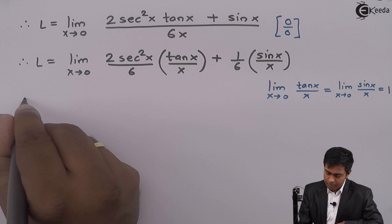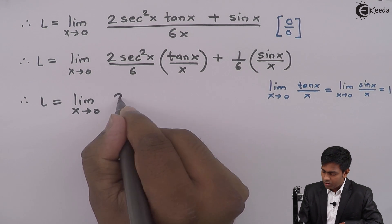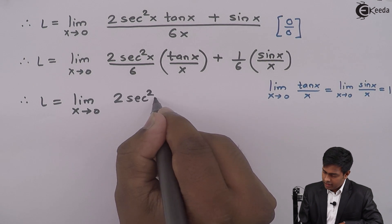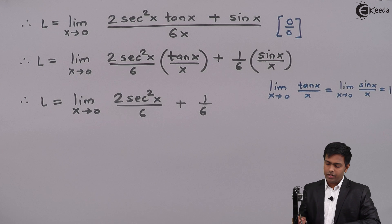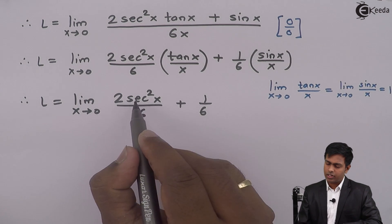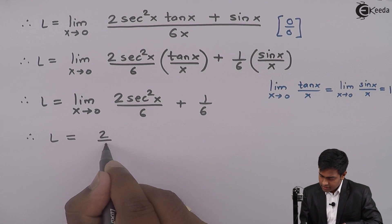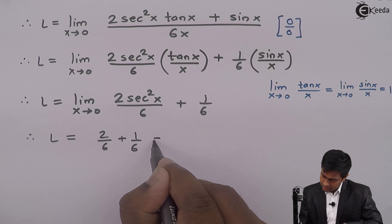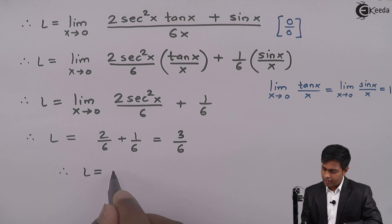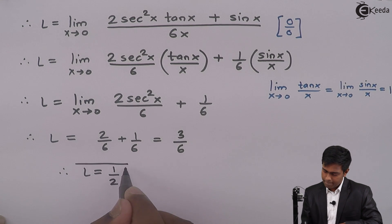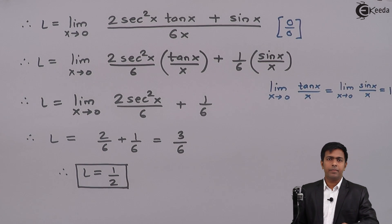Therefore L equals limit x tends to 0 of 2 sec square x upon 6 plus 1 by 6. Now substituting x as 0: sec 0 is 1, so this gives 2 by 6 plus 1 by 6, which equals 3 by 6. Therefore the value of the given limit is 1 upon 2. We have obtained a finite value for the given limit. Thank you.